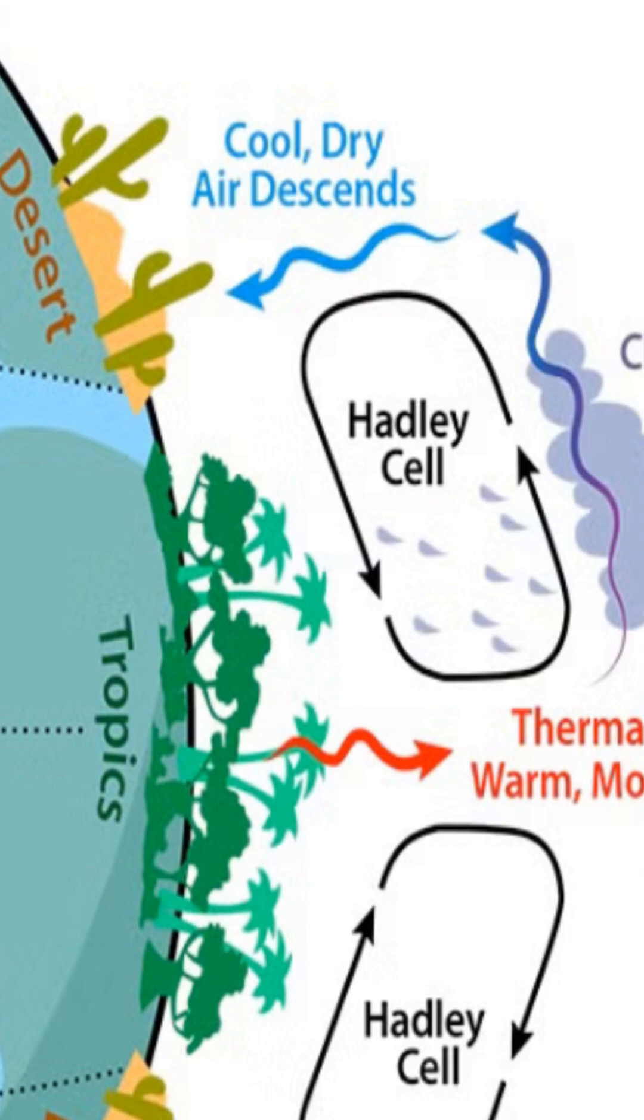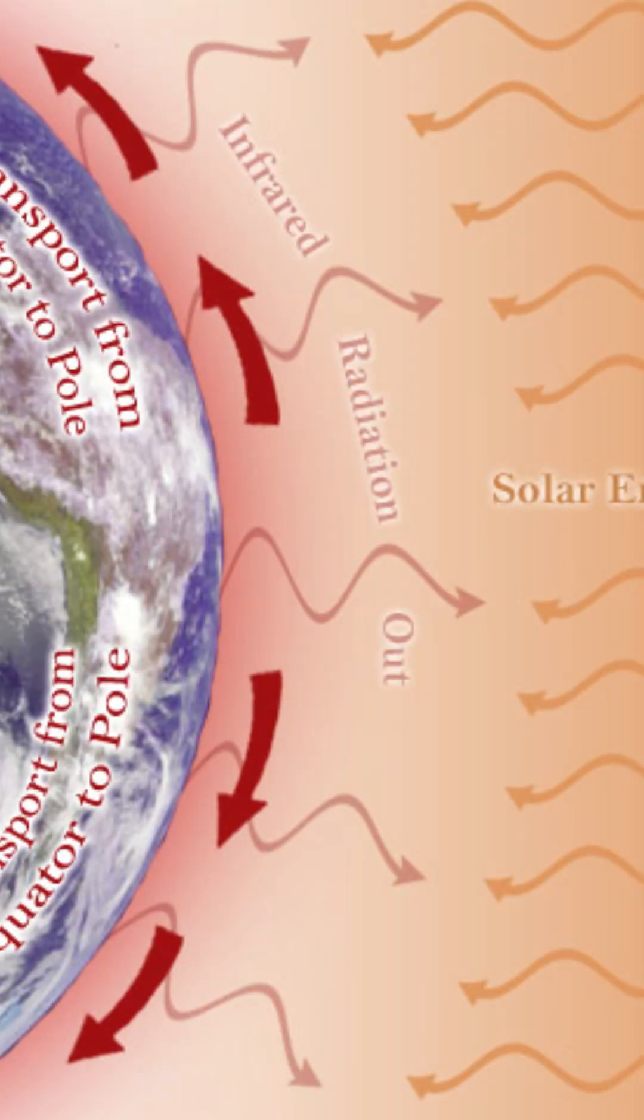This time we'll continue looking at the immense planetary atmospheric circulation patterns which are the foundations of the planet's climates. Here in Climate Nugget 19, let's notice that all that energy being deposited near the equator is not going to stay there.